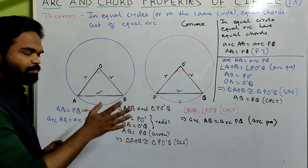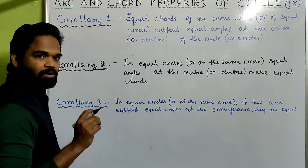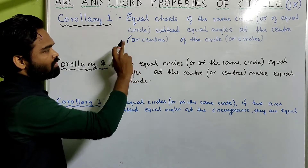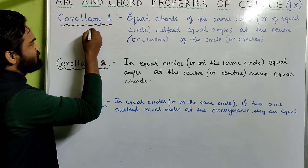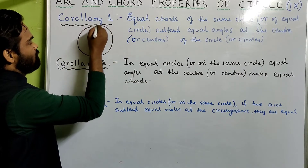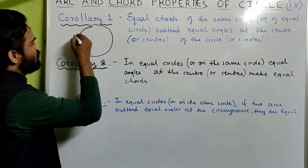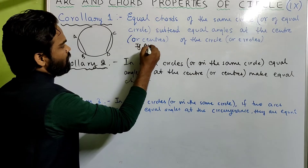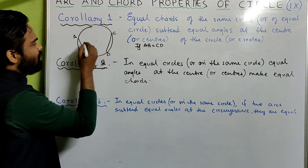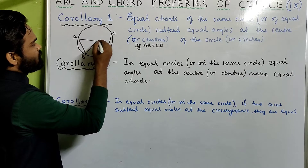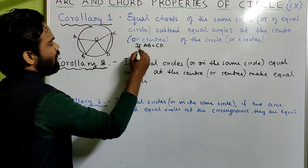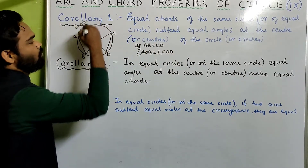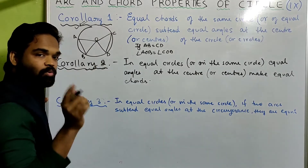Now let us see two properties based on these results. First: equal chords of the same circle or of equal circles subtend equal angles at the center. If I take a circle with two equal chords AB and CD — if AB equals CD — then the angles which these chords subtend at the center, angle AOB and angle COD, will be equal.